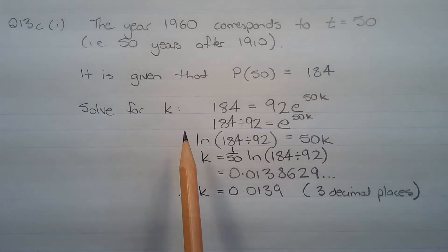We're going to solve for k the equation 184 = 92e^(50k). The first step is to divide both sides of the equation by 92, so we have 184/92 = e^(50k).